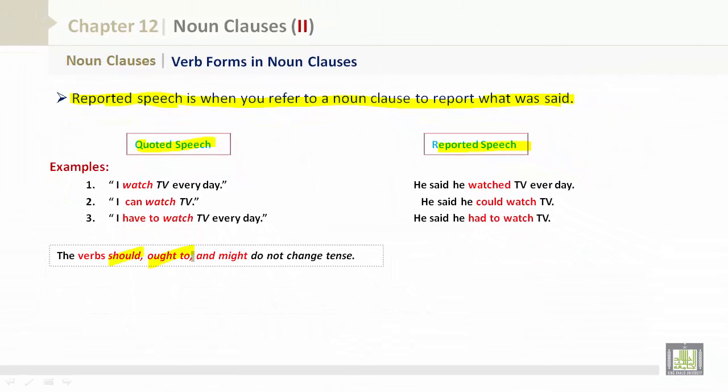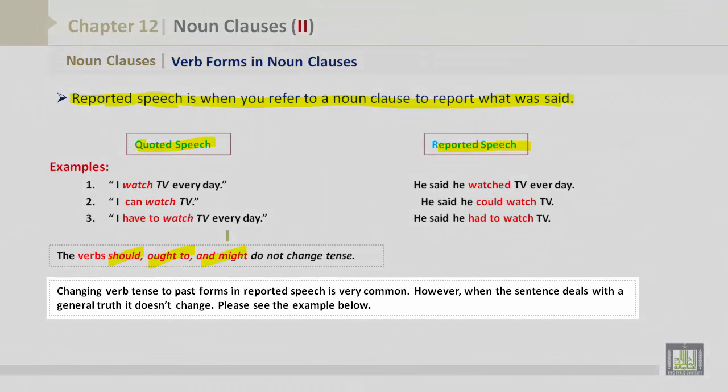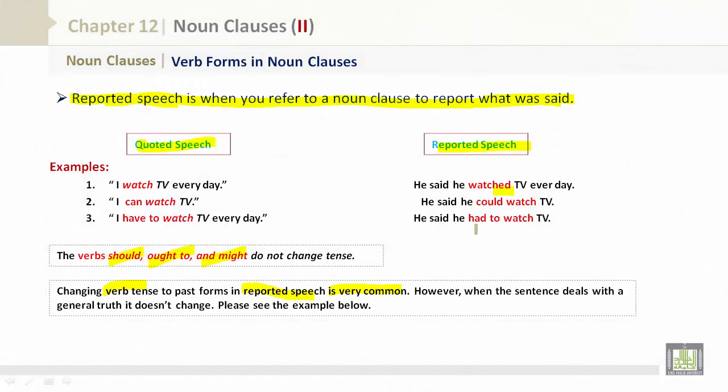The verbs should, ought to, and might do not change tense. What do I mean by tense? Past tense, future tense, present tense. Changing verb tense to past forms in reported speech is very common. Look at the EDs: He watched, he had, he could. These are all past tense.